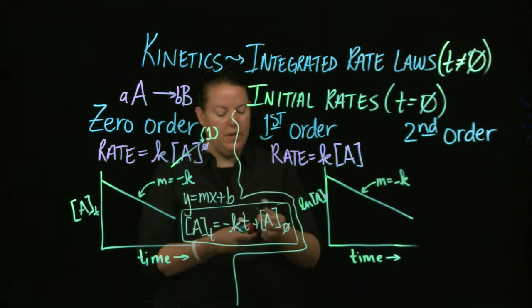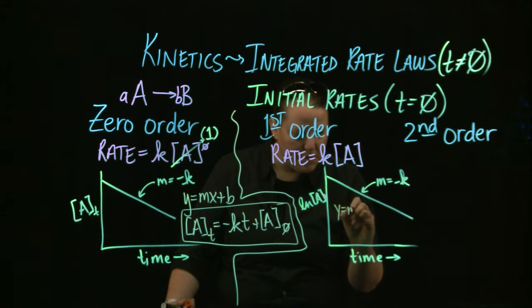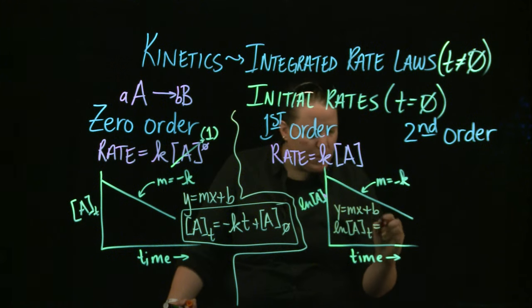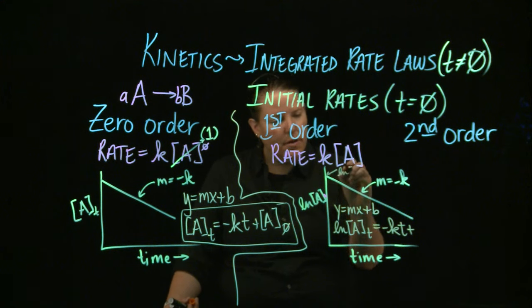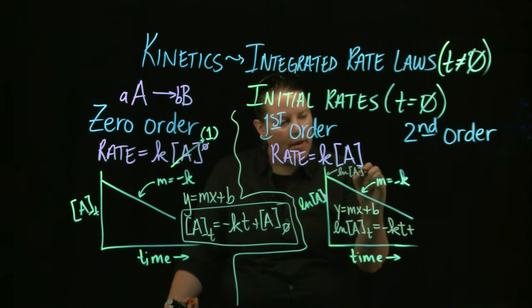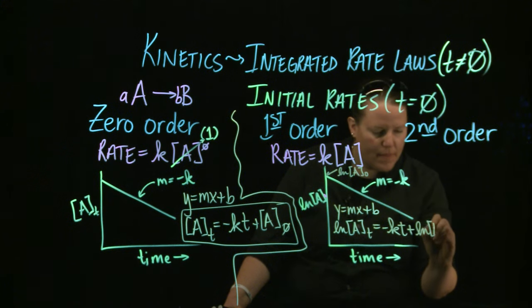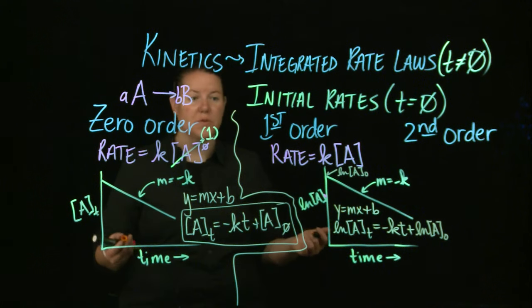And now I'm going to do the equation of the line. The equation of the line here, we do Y equals MX plus B. Then the natural log of A over time, which is what this is, is equal to M, which is negative K, times time, which is T, plus whatever this is, which would be the natural log of A at the very beginning, when time was equal to zero. And that is the integrative rate law for the first order equations.